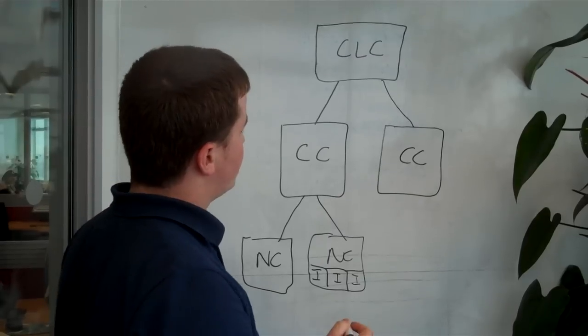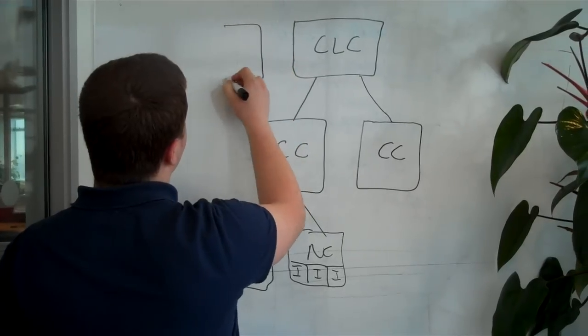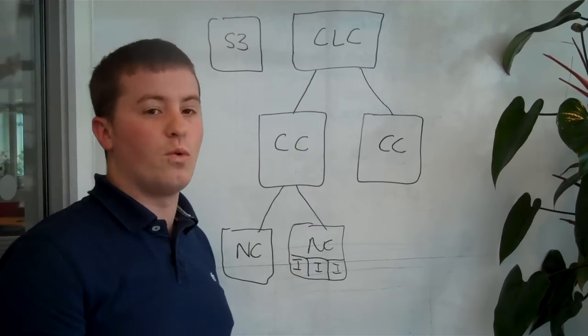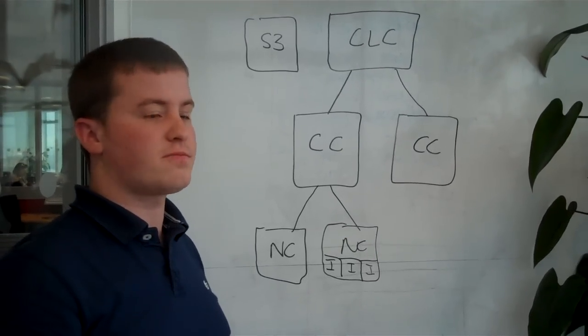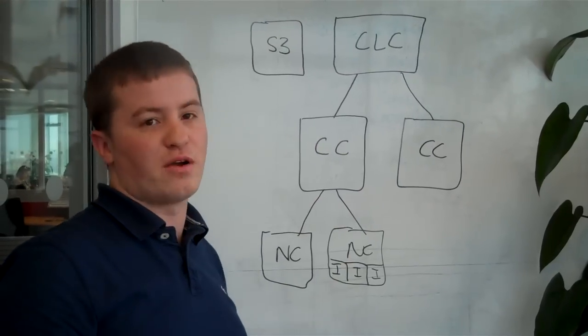There are also two additional services that are provided. There's S3 services coming from the WARS controller. That's providing your object storage, just like they do on Amazon. The easiest way to think of that is as a network file system.